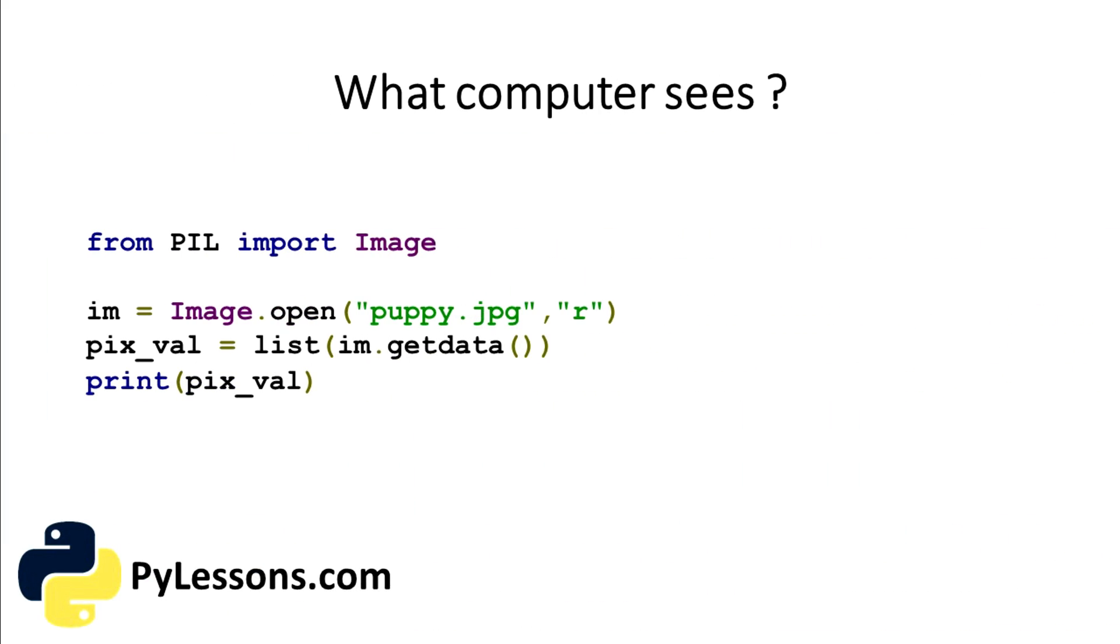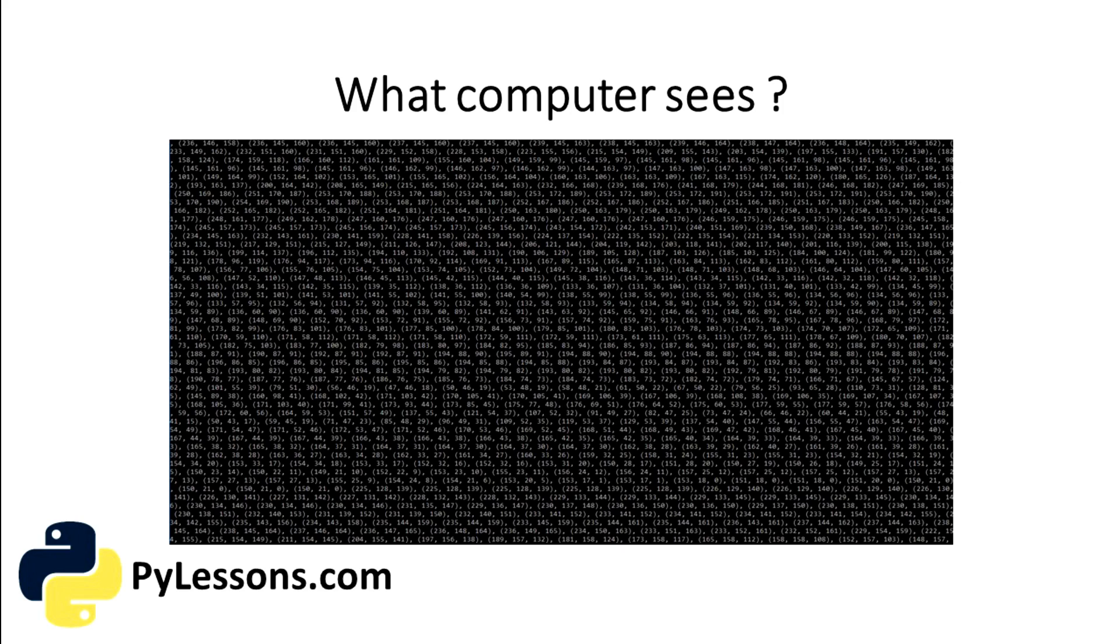And here is a shared script. I am not writing it right now, but I will post it in a text version. So we take the same picture as it was below as puppy.jpg and we get all the pixel data from it. And we can simply print it on our Python shell.